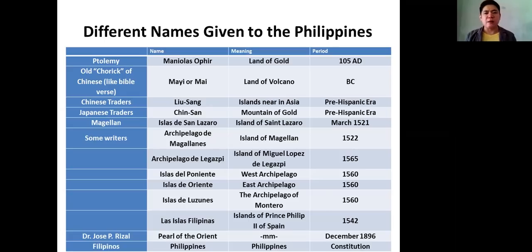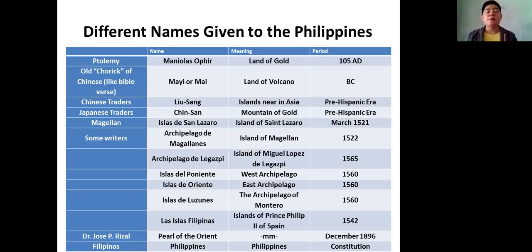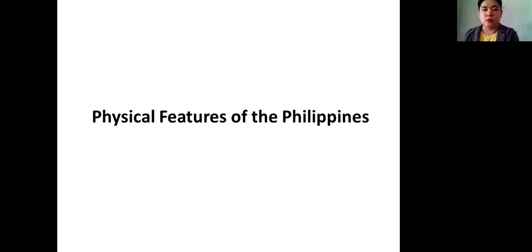José Rizal also gave a name to the Philippines — he called the Philippines the Pearl of the Orient. And right now, in our Philippine Constitution, the name of our country is none other than Philippines.